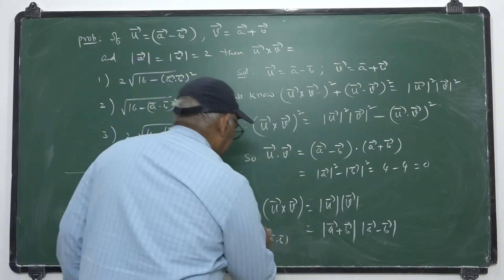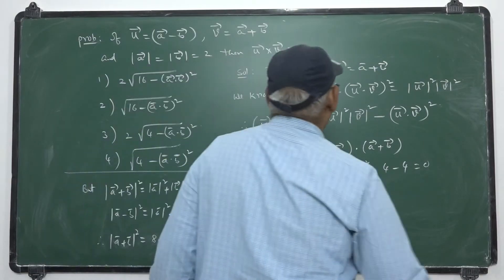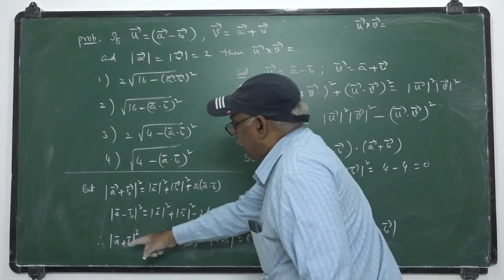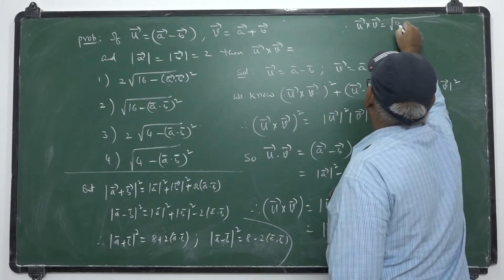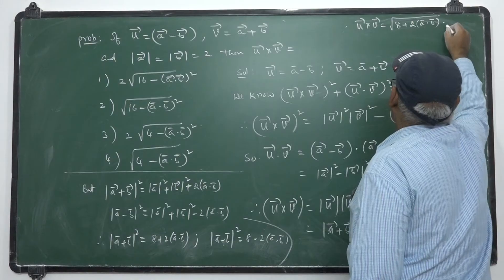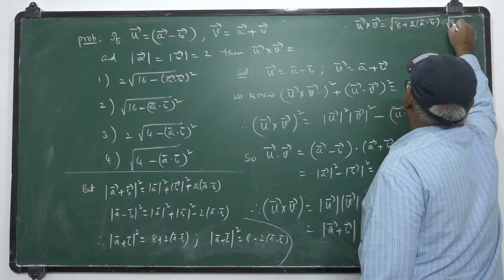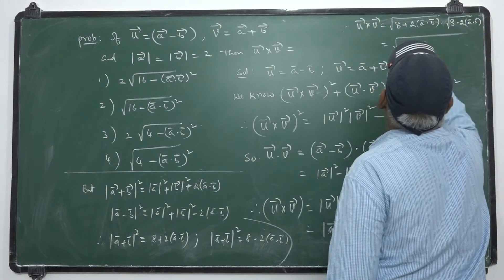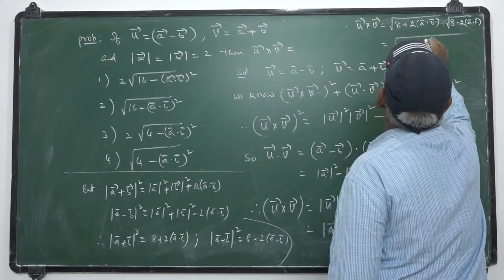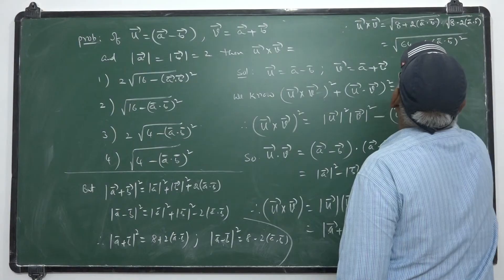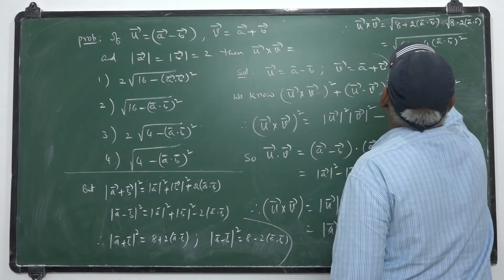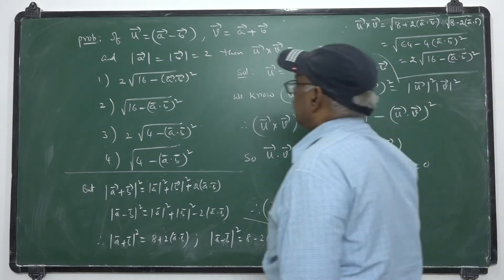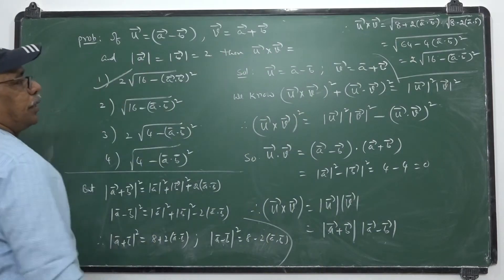Therefore |ū × v̄| = √[(8 + 2ā·b̄)(8 - 2ā·b̄)] = √[64 - 4(ā·b̄)²]. Taking 4 as common, we get 2√(16 - (ā·b̄)²). So twice √(16 - ā·b̄) whole square is the required value.